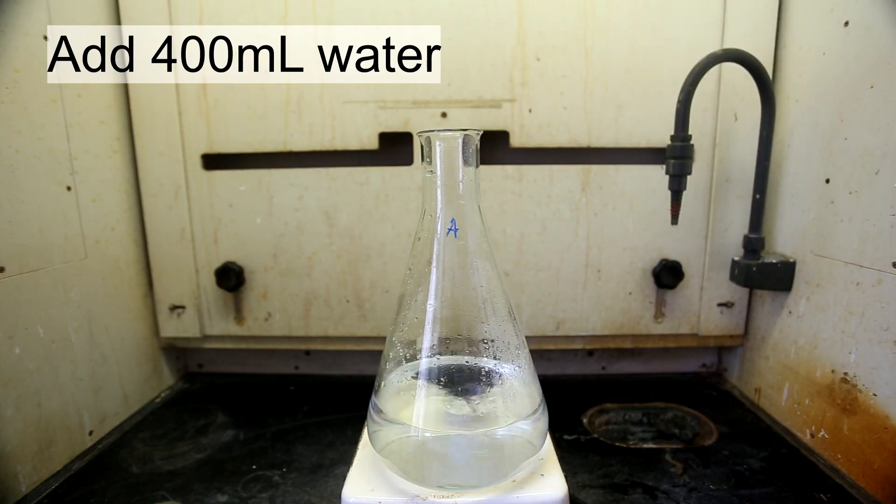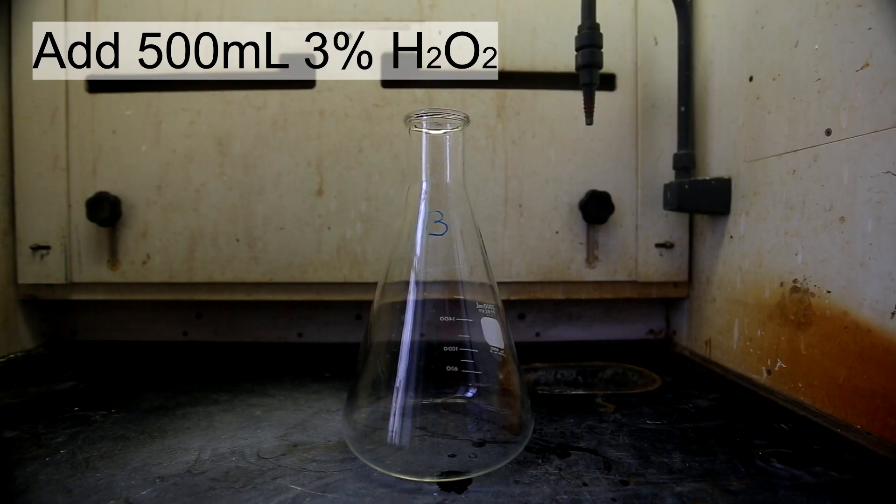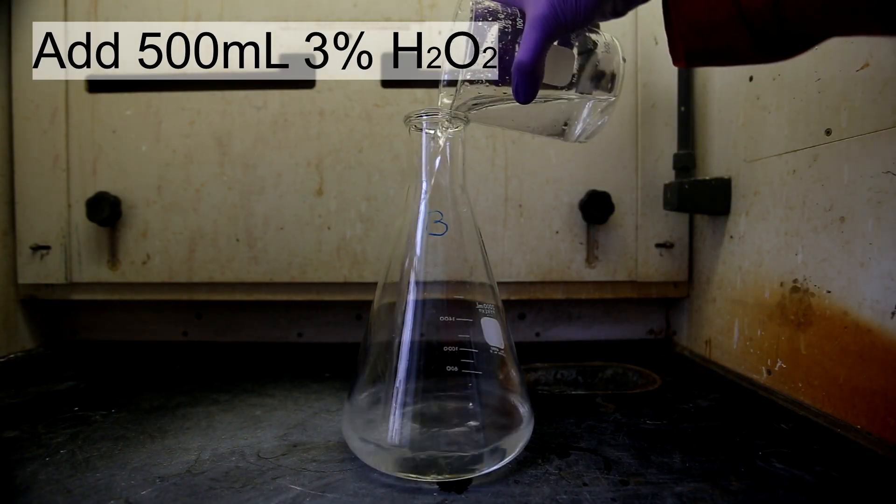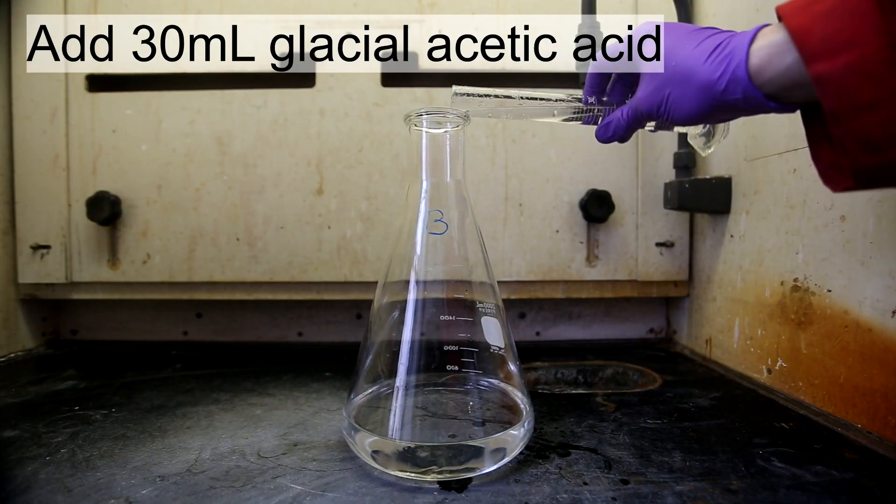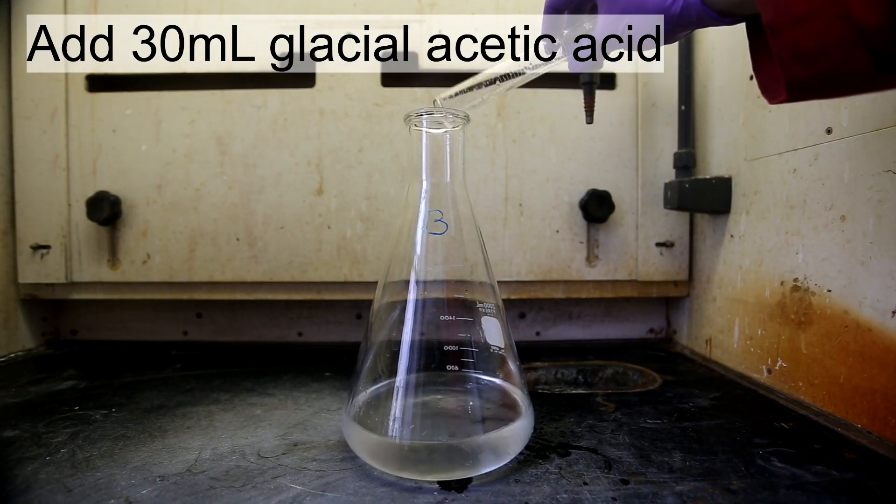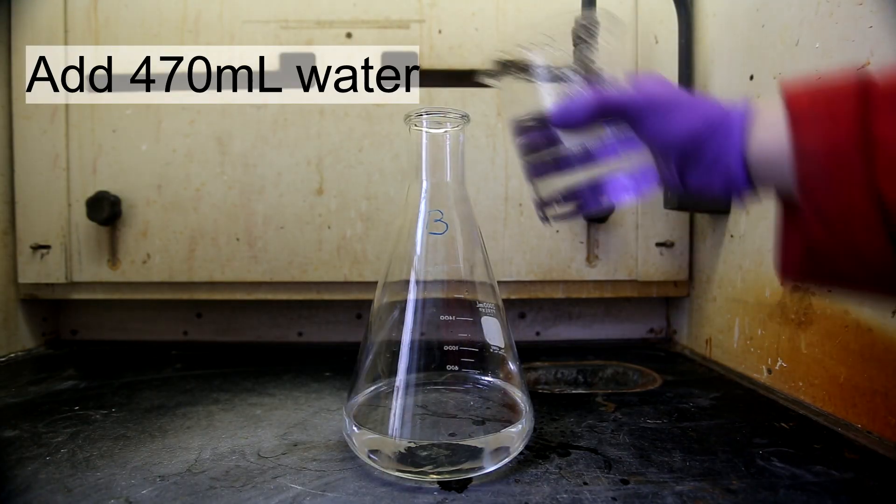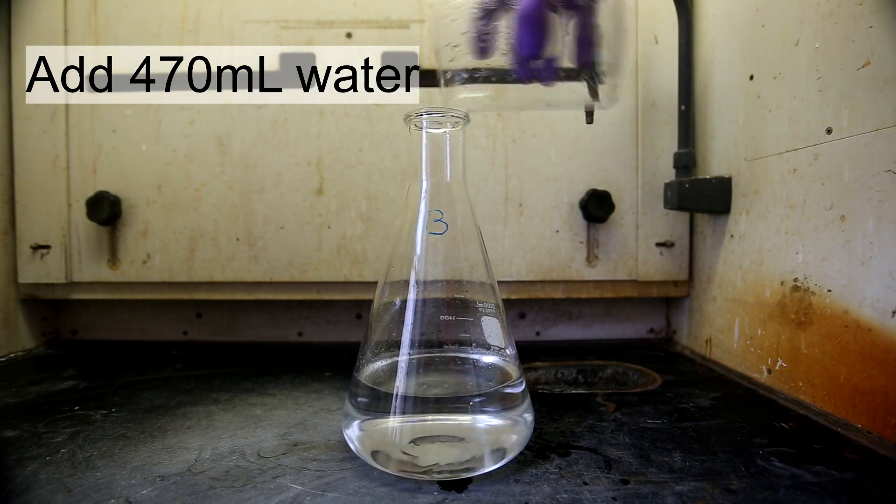Solution B is much easier and quicker to make. To another container labeled B, add 500 milliliters of 3% hydrogen peroxide. Next, add 30 milliliters of glacial acetic acid. And finally, top this off with 470 milliliters of water.